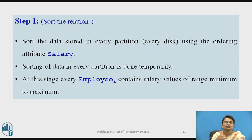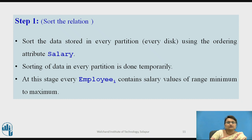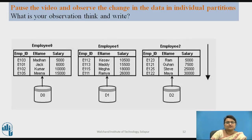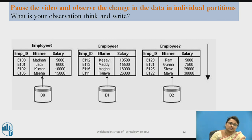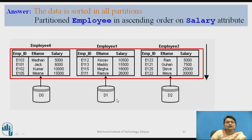After sorting each partition, the lower salaries appear first and increase from there. Every disk now contains data in sorted order. You can pause the video and observe the change in data. You can see that all partitions are sorted — for example, 5000, 6000, and so on across the disks.